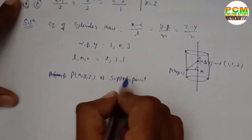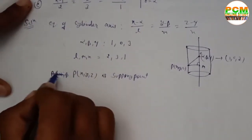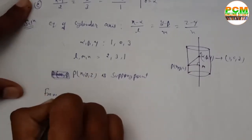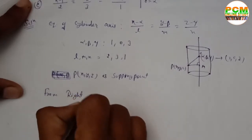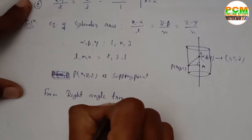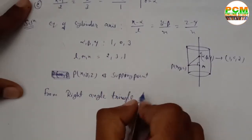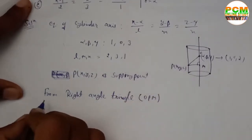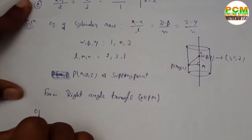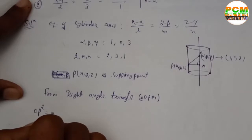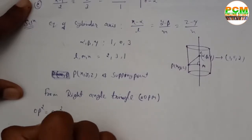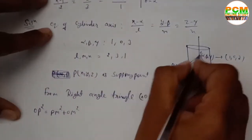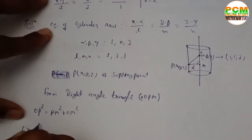From triangle OPM, we apply the Pythagorean theorem: the hypotenuse squared equals base squared plus perpendicular squared. So OP² = PM² + OM², where PM is the radius R.